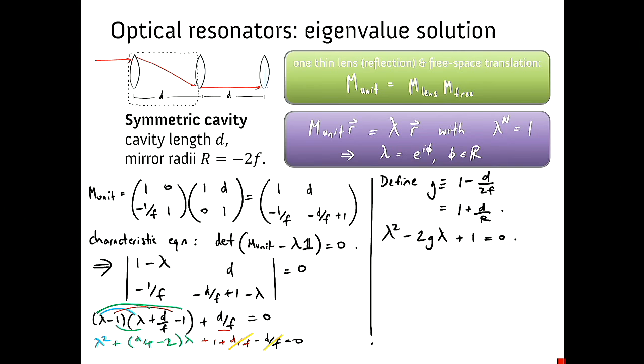And it's 1 minus d on 2f which turns out to be 1 plus d over r when you substitute in the relationship between focal length and radius of curvature. You can see it's dimensionless because it's 1 plus or minus the ratio of some lengths. And it greatly simplifies our quadratic equation. It turns it into lambda squared minus 2g lambda plus 1. So we can write down the solution to the quadratic. Negative b is 2g. b squared is 4g squared. And 4ac is 4 times 1 times 1. 2a is 1. Heaps of 2 cancel. There's a 2 there, 2 there, and inside the third there is a 2 as well. That leaves us with this nice expression for the roots: g plus or minus square root of g squared minus 1.